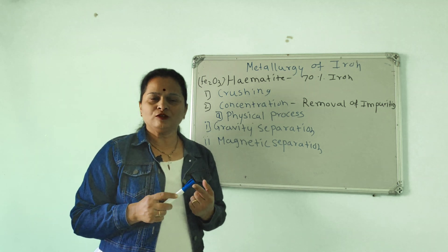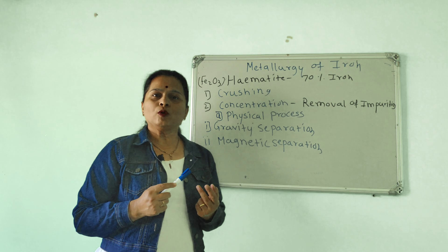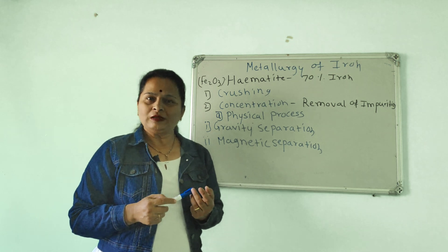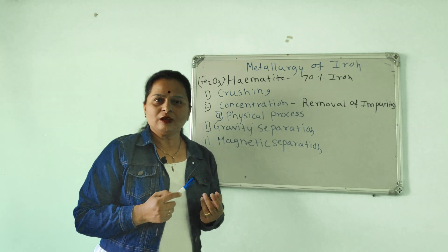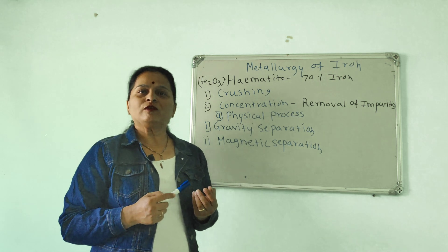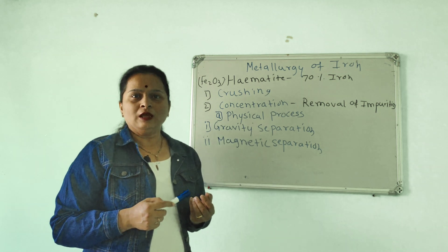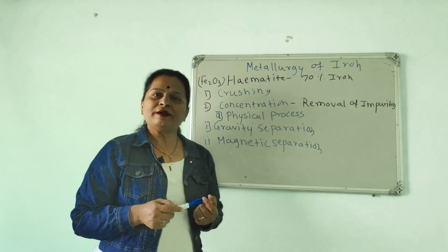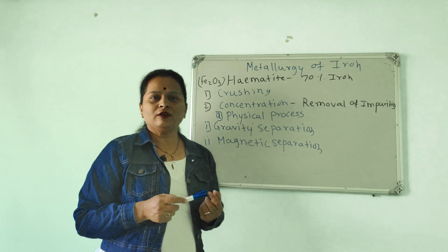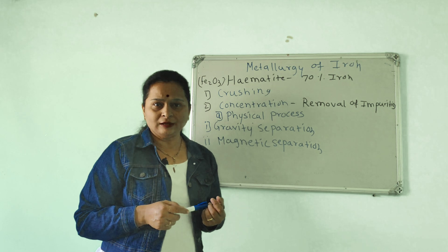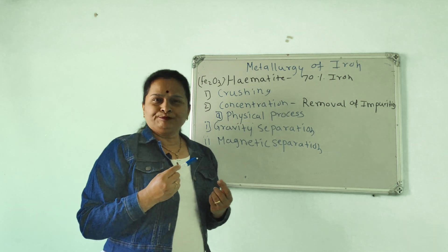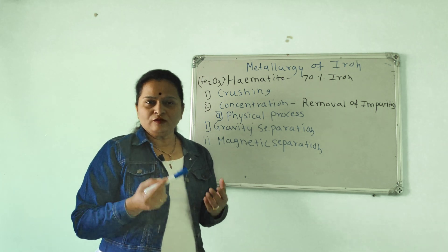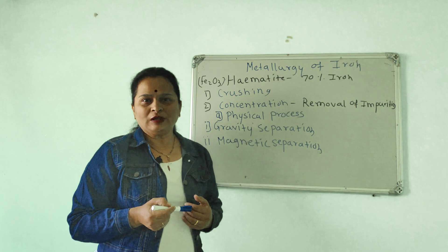This is the definition of mineral ore, occurrence of metal in native state, combined state, different forms of combined state, then definition of gang or matrix, then flux, slag, and what is metallurgy.